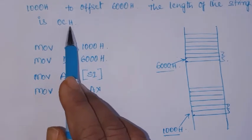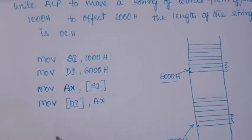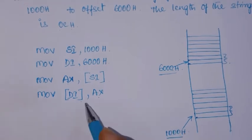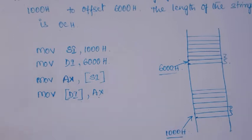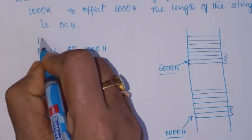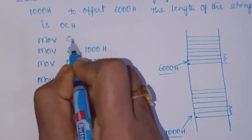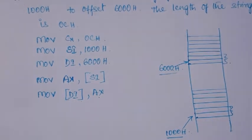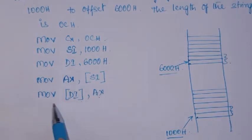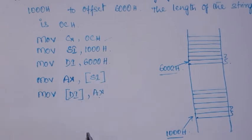0C words are to be moved total. We cannot write the MOV instructions 0C times manually, so we use the loop instruction. To use it, first we initialize the counter register CX with 0CH. Once this counter register is initialized, we can repeat the transfer instructions that many number of times.